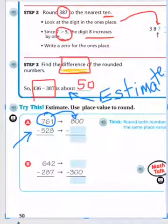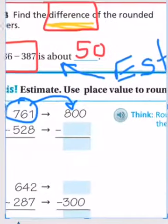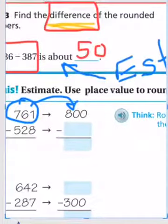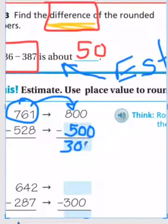528 rounded to the nearest 100 is, and you should be saying to yourself, well Mr. P, that's 500. Now we can subtract. 800 minus 500 is 300.